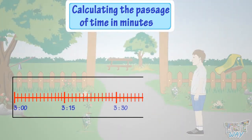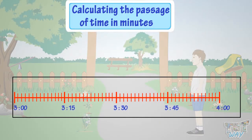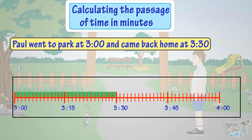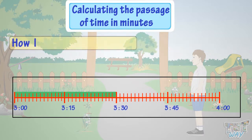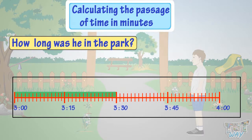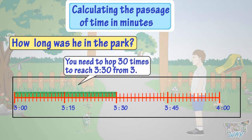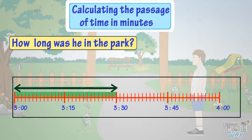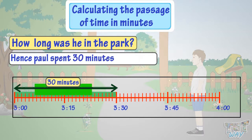See the next figure. Paul went to the park at 3 and came back home at 3:30. For how long was he in the park? So, 30 minutes are there between 3 o'clock and half past 3, or 3:30. Hence, Paul spent 30 minutes in the park.